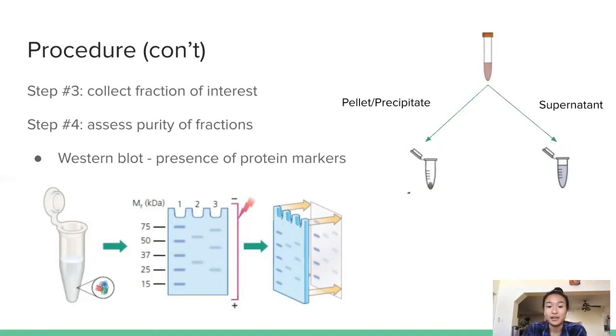Step four is to assess and verify the purity of your fractions. This is usually done with a Western blot, which you might remember from Bio 161. It's a common technique in cell and molecular biology to identify proteins in samples and find the presence of specific protein markers.